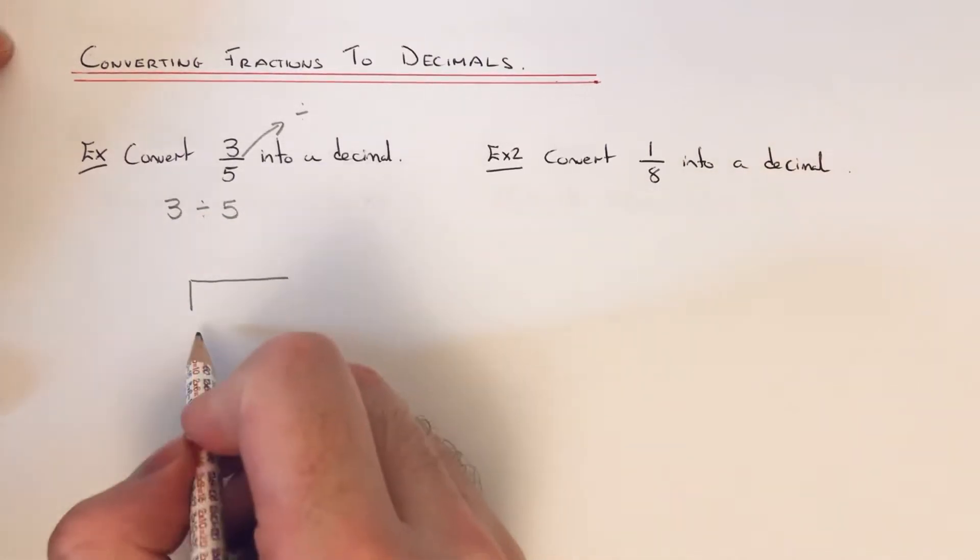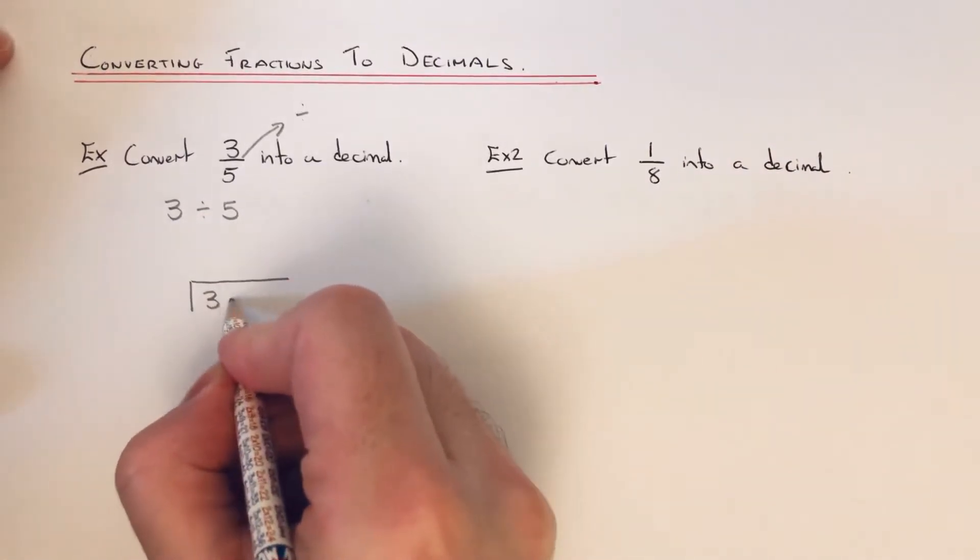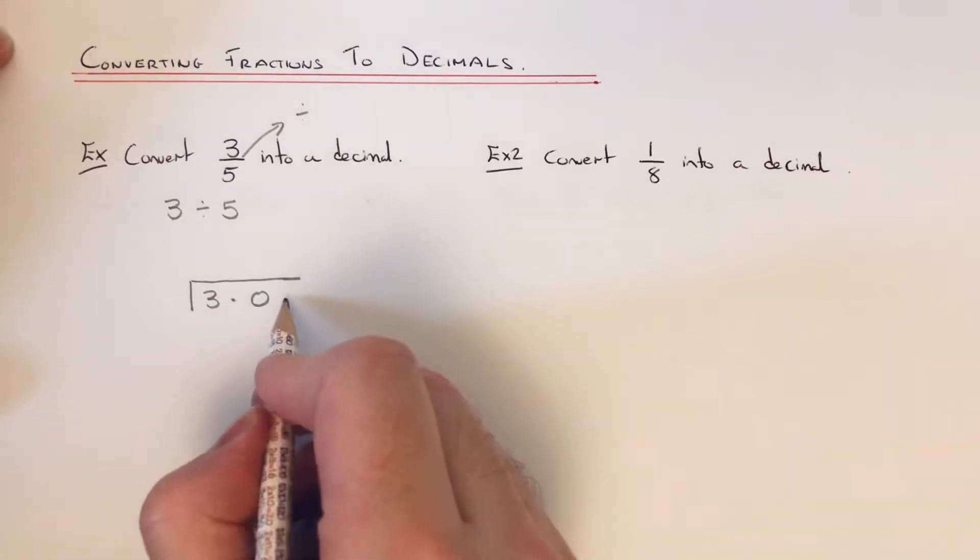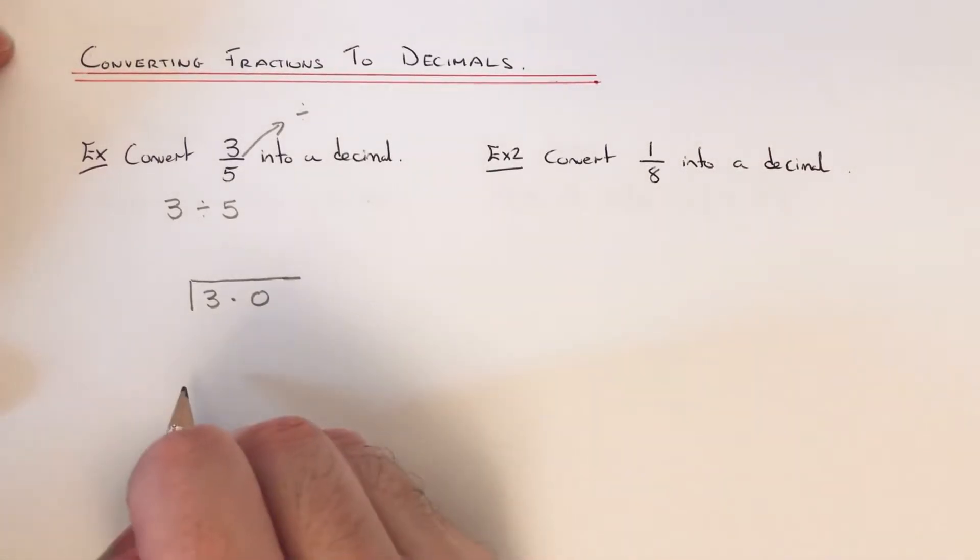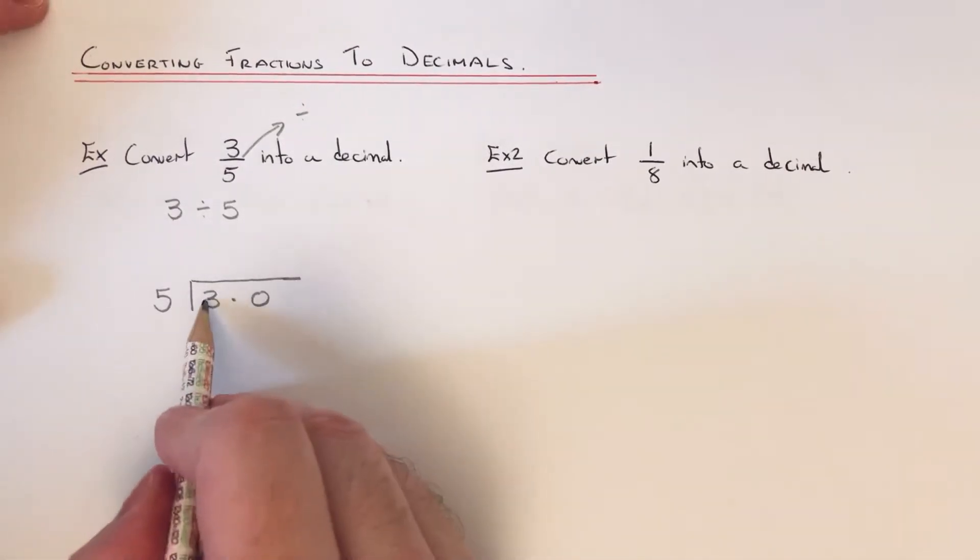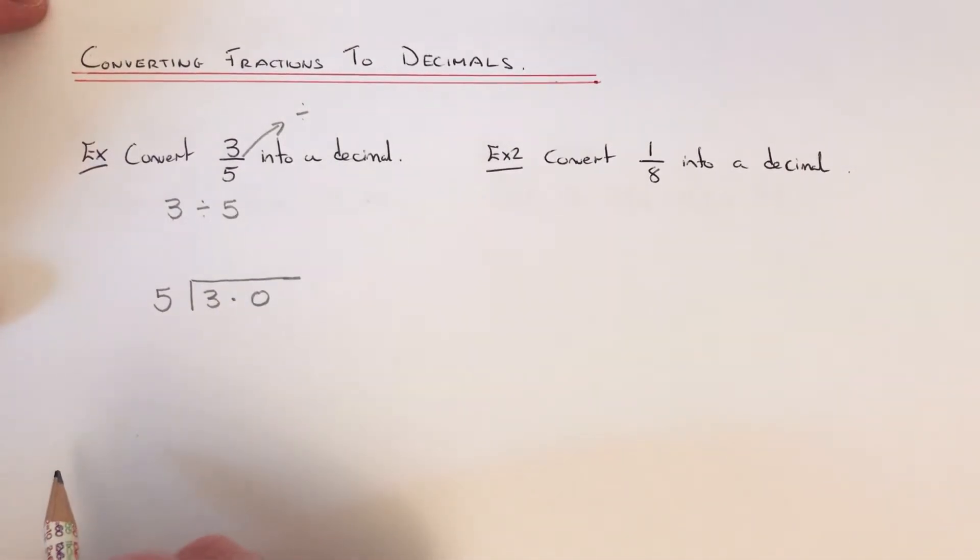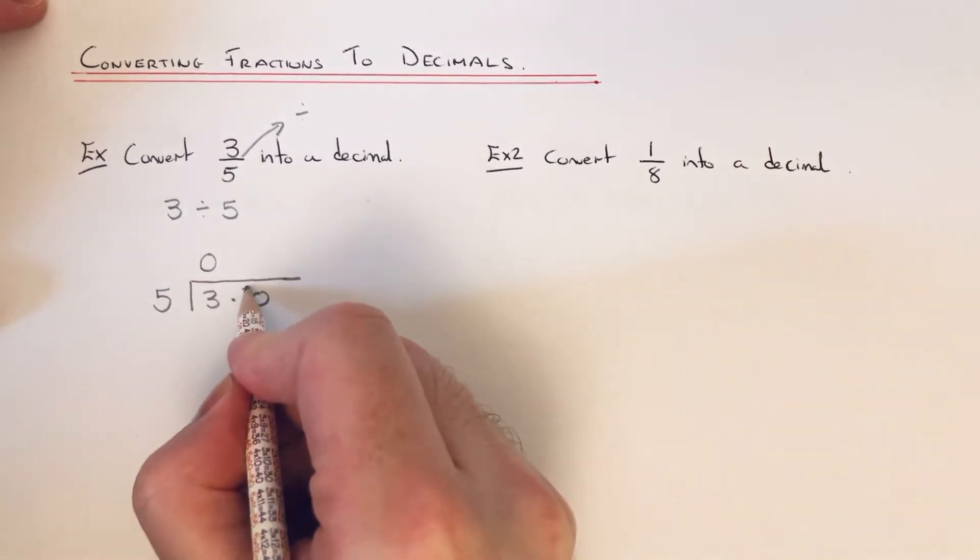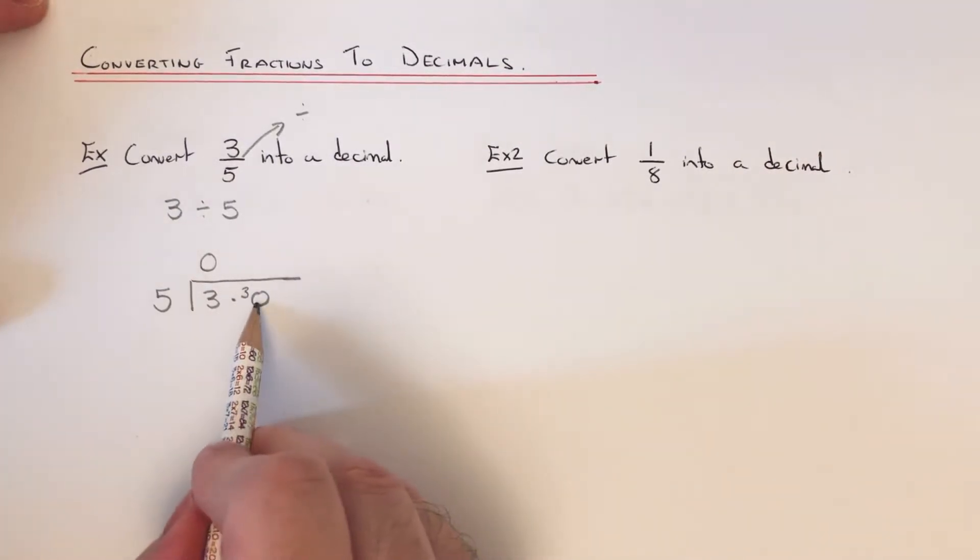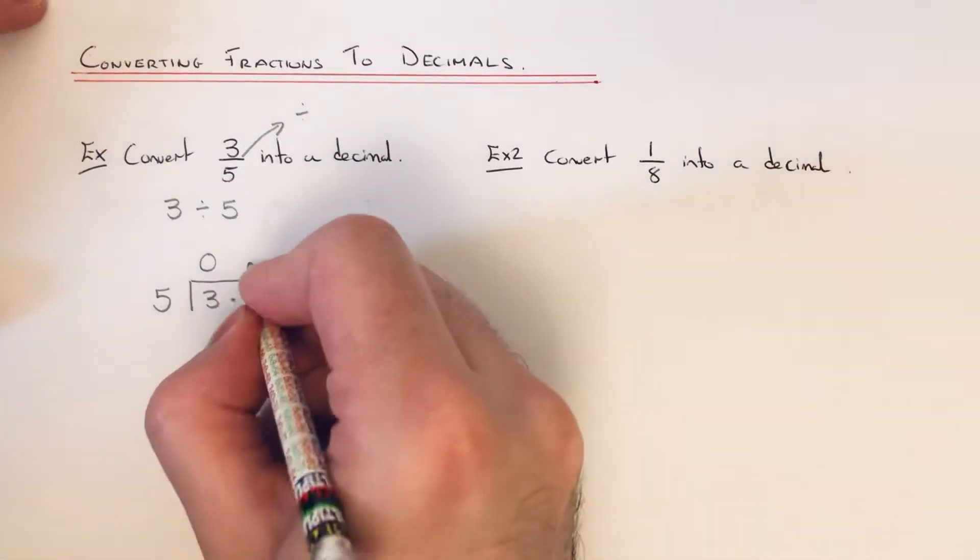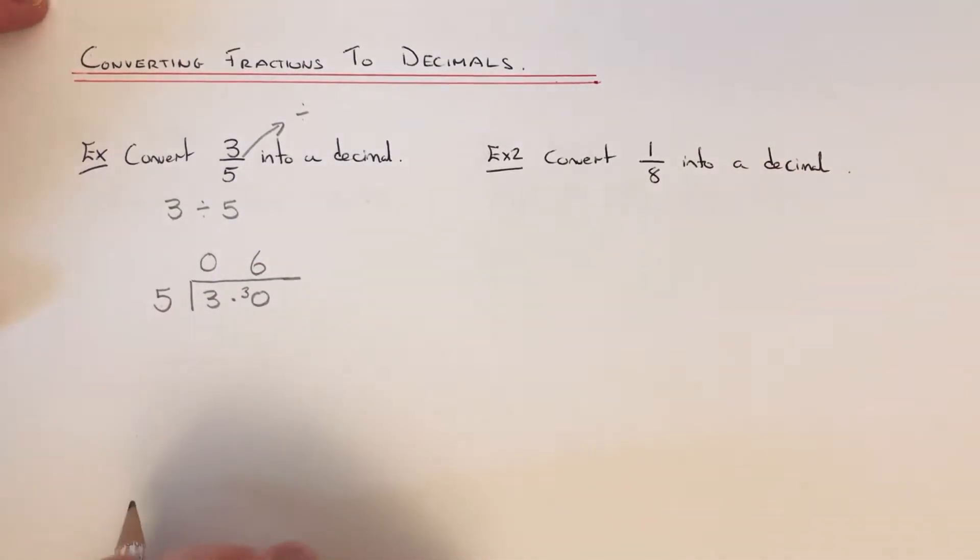Now we've got to write 3 as 3.0 - we might need to add more zeros at the end later on - and the number we're dividing by is 5, so we put that at the start. We just need to work this out now. So 3 divided by 5, well we can't do that, so that's 0 remainder 3. Then do 30 divided by 5, that goes 6 times. Put the decimal point in the middle, so our answer is 0.6.